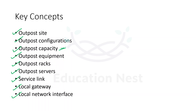Outpost capacity refers to the compute and storage resources available on the Outpost. You can manage and view the capacity from the Outpost console. Outpost equipment is the physical hardware that provides access to AWS Outpost services. The hardware includes rack, server, switches, and cabling, all owned and managed by AWS - the AWS team will come to your on-premises to set this up, and you can schedule that.